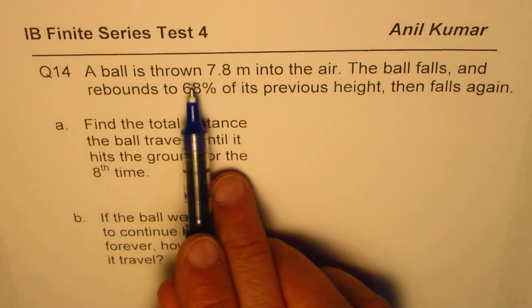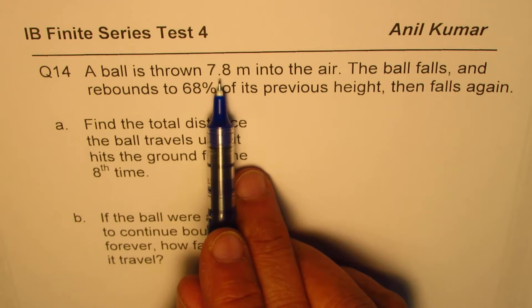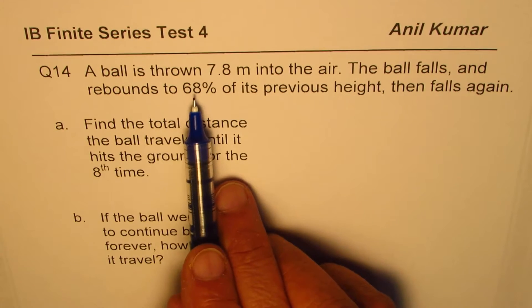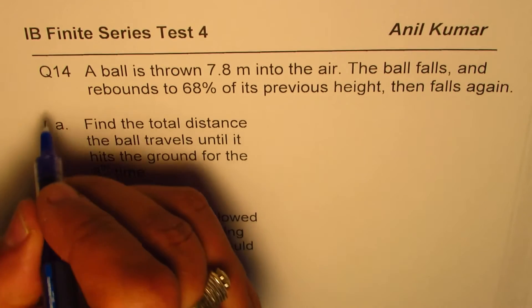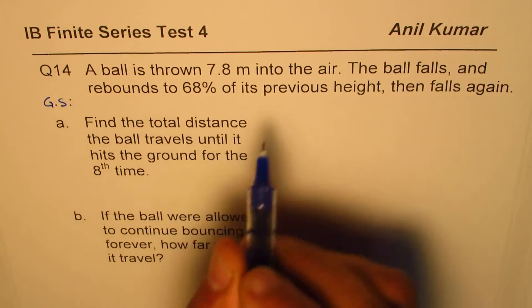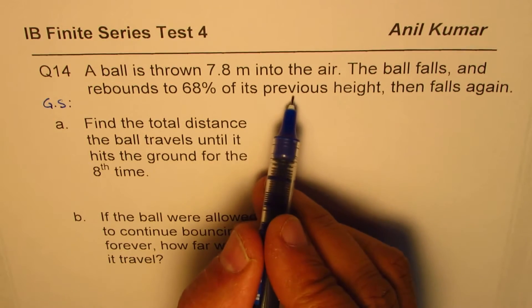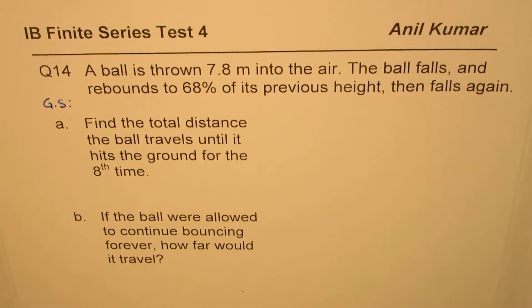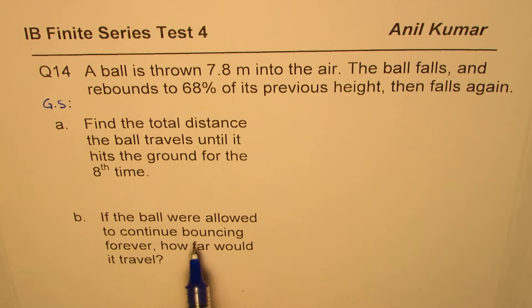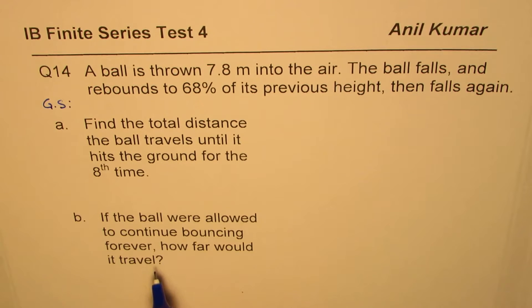We are given a ball that is thrown and we need to find the total height. Since it is a geometric series — every time it is 68% of the previous amount — it is indeed a geometric series. So for a geometric series, we have to find the total distance and also the distance it travels when n is infinity.